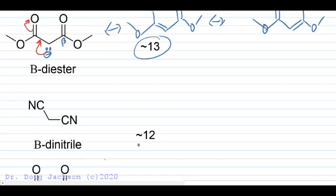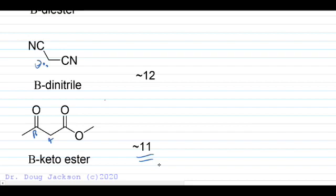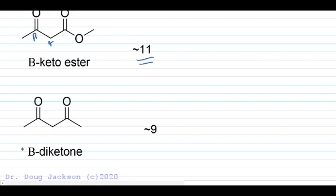The beta di-nitrile is about the same pKa as the beta diester because esters and nitriles have a similar stabilizing effect on the alpha carbanion. Another functional group we'll see again is the beta keto ester — esters rank higher in nomenclature than ketones, so the ester is the main functional group. Stabilization goes to two positions, and since a ketone is more stable in its enolate form than an ester, we drop from pKa 13 down to 11. A beta diketone takes that further from 11 down to 9 by replacing the other ester with a ketone.